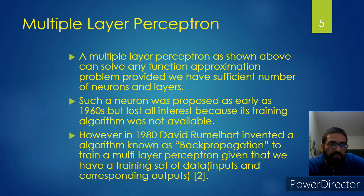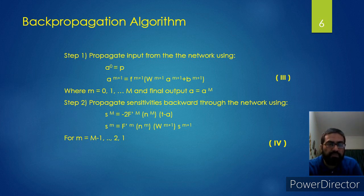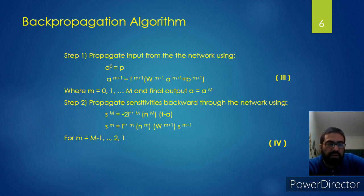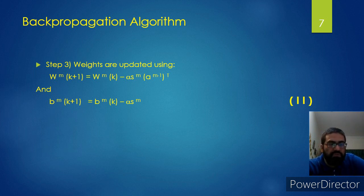Here is a bird's eye view of the backpropagation algorithm. In step one, inputs are propagated through the network and the outputs are calculated. Then the sensitivities are propagated backward — we propagate the input through the network, subtract from the required output, and that error is propagated backward through the network. On the basis of that, as you can see in slide 7, the weights and biases are updated with new values. This keeps going until the error becomes zero or close to zero.